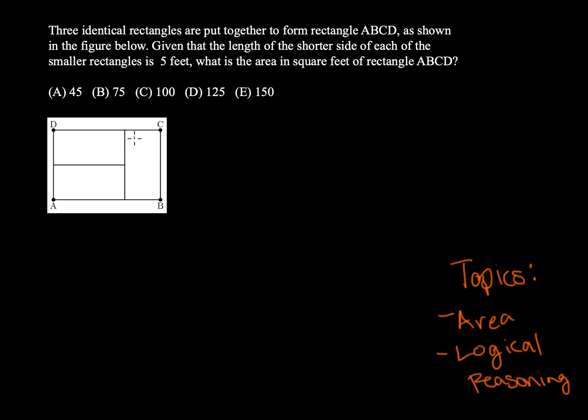So they're saying that these three rectangles are identical, and they're saying the length of each shorter side is five feet. So let's go ahead and label our image here with that information. So each of these sides is five feet. And they're asking us to find the total area of this bigger rectangle ABCD.